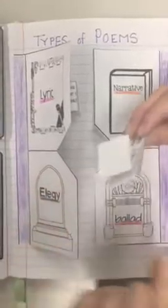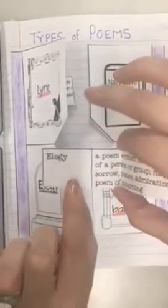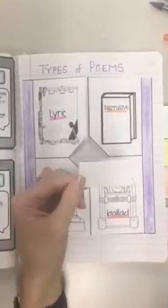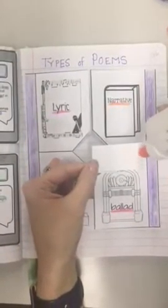But then what we're going to do when we go to glue is, because this one's on the left, I'm only going to glue the one that has the type, right there. So I'm going to just kind of flatten this down, making sure that I'm gluing just the type of poem.